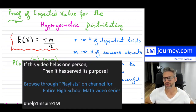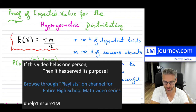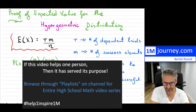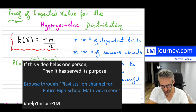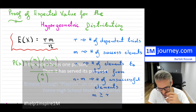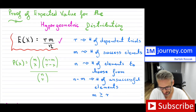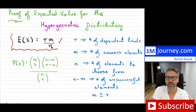Welcome back. So, proof of expected value for the hypergeometric distribution. If you're going to take the expected value, you're going to find that it is equal to R multiplied by M divided by N.